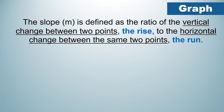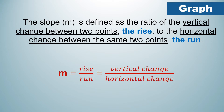Let us start with the graph. The slope m is defined as the ratio of the vertical change between two points, or the rise, to the horizontal change between the same two points, or the run. Simply put, slope is equal to rise over run, where rise is the vertical change and run is the horizontal change.